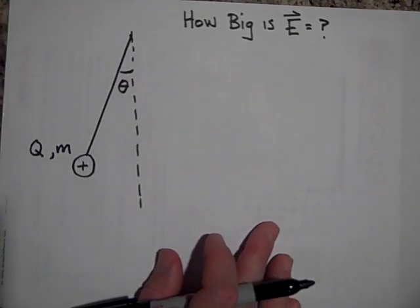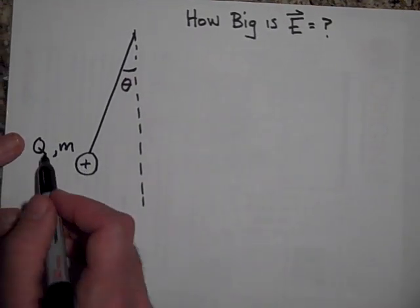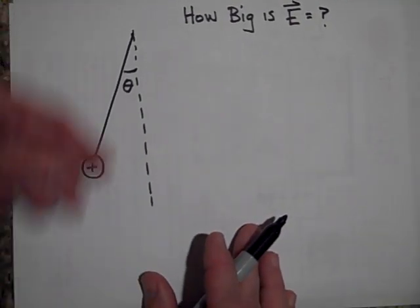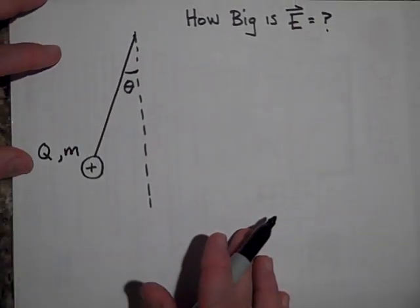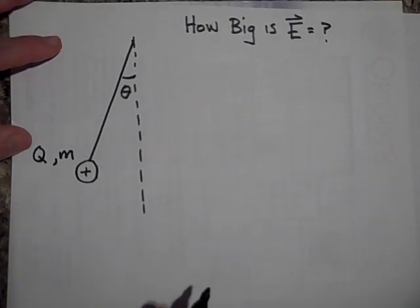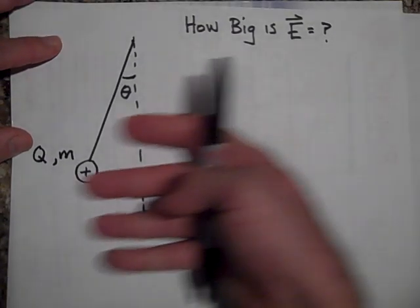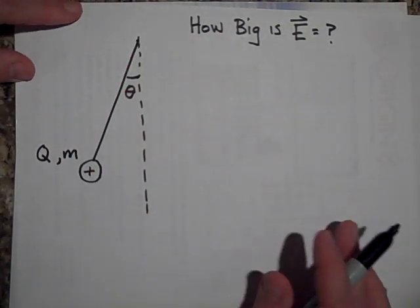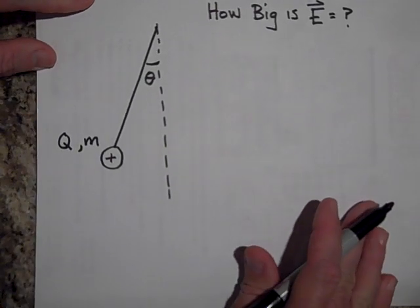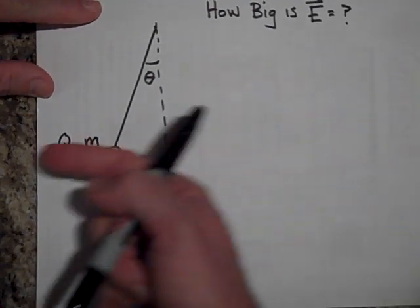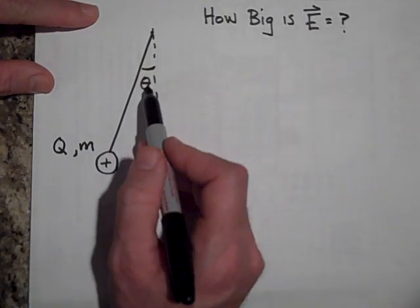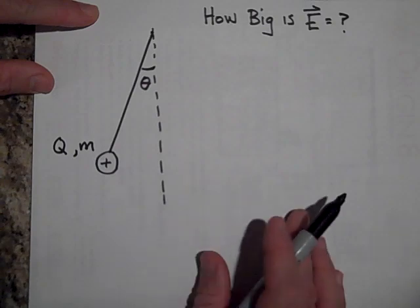All right, last one. We have a charge Q, mass of M. It's in this gravitational field - we're on Earth. It's in a gravitational field that's downward. And there's an electric field also. And the electric field is either going this way, straight that way, or straight that way. It's in the X direction. Which way do you think it is? Yeah, you're right, the electric field is going that way. Okay, and the question is, how big is E if the angle is theta and the mass of this is M and the charge is Q? So how big is the electric field?